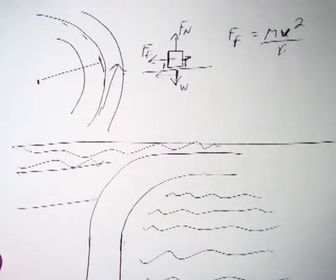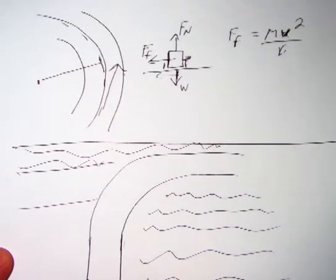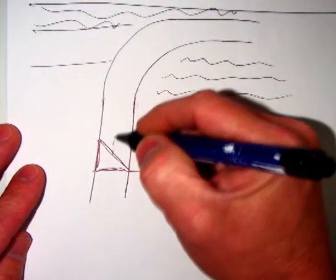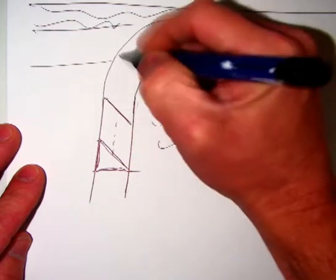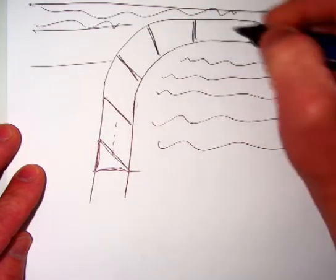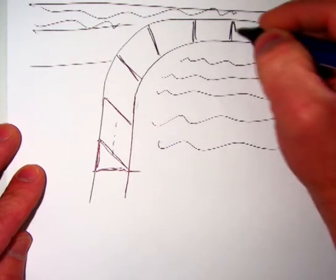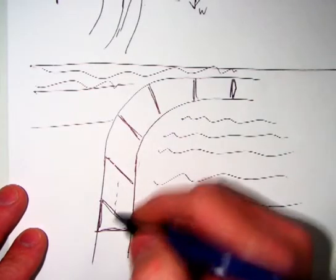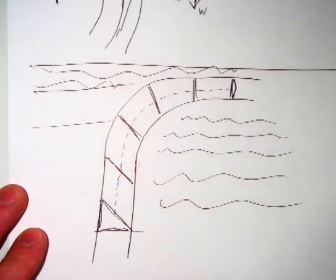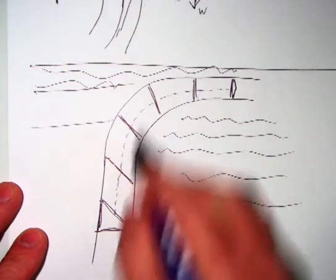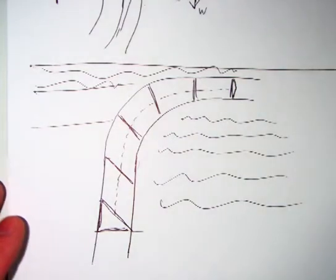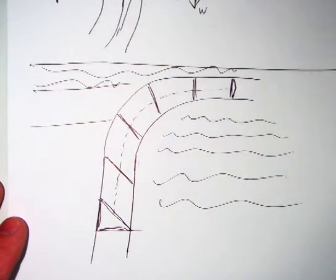So what they do is introduce a new force by banking. They take that curve and instead of it being flat, they make it sloped — banked — so that the car can actually go around the curve and still make it at the higher speed limit.